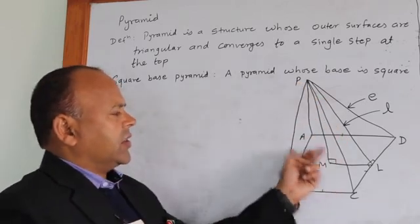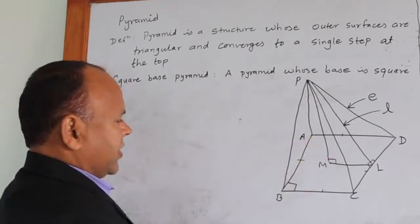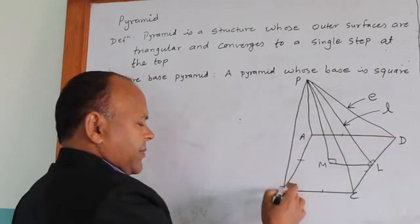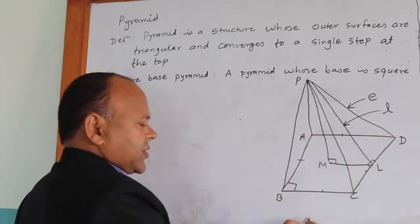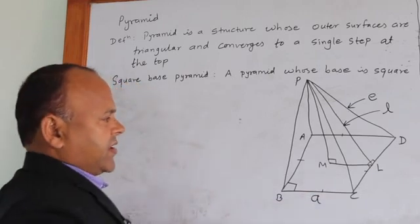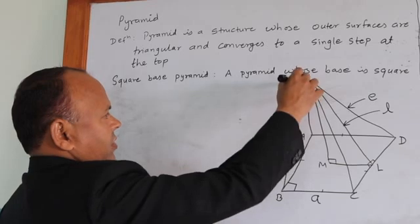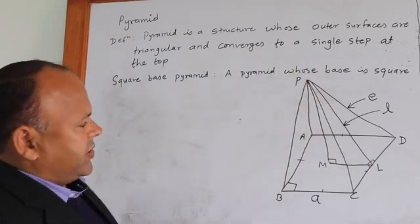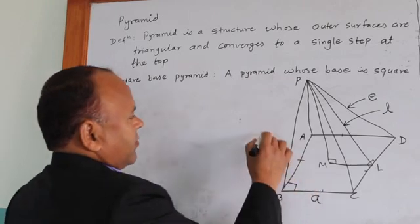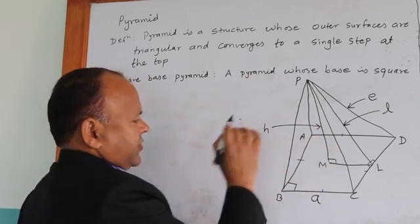All the slanting heights will also be equal. Similarly, B-C, C-D, A-D, and A-B are the equal sides of the square, and the sides are denoted by A. The perpendicular drawn from the vertex of the pyramid to the plane is called the vertical height, the actual height of the pyramid, which is denoted by H.